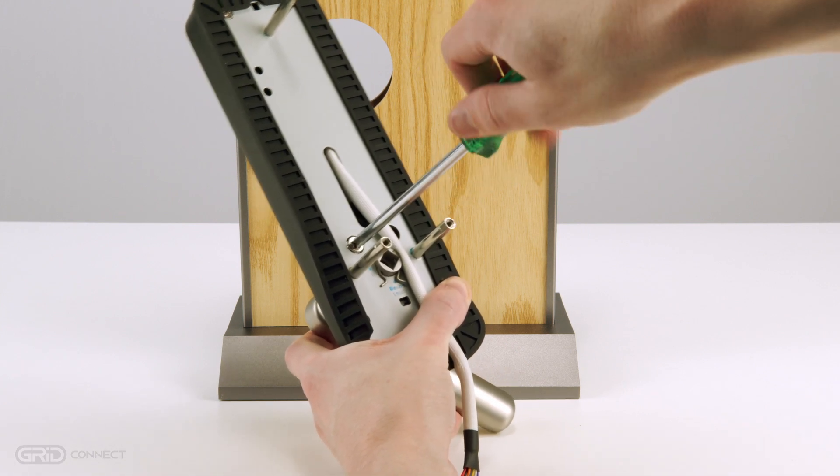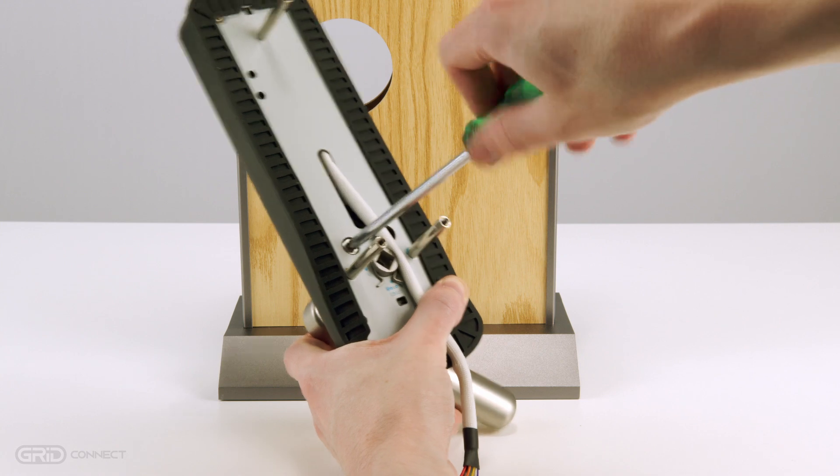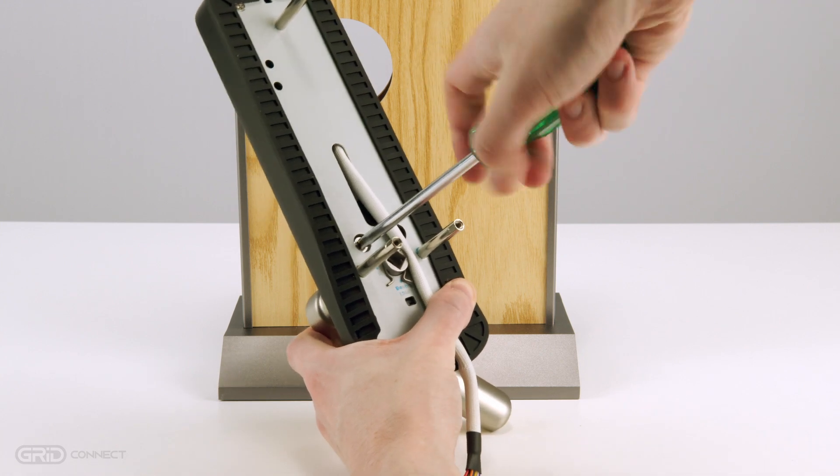Repeat this step for the back panel. If you have a right hinged door you may skip this step.